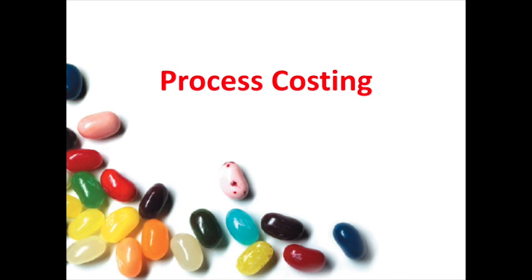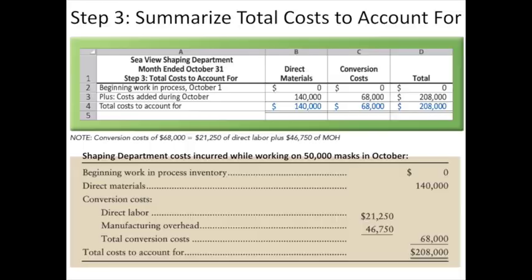We're continuing on with our process costing series, and in this video we're going to continue on with the steps used in process costing. Now that we have accounted for our units and computed equivalent units, we can now summarize the total cost to account for. In this slide you can see the shaping department costs that were incurred while working on those 50,000 masks that we accounted for in an earlier video.